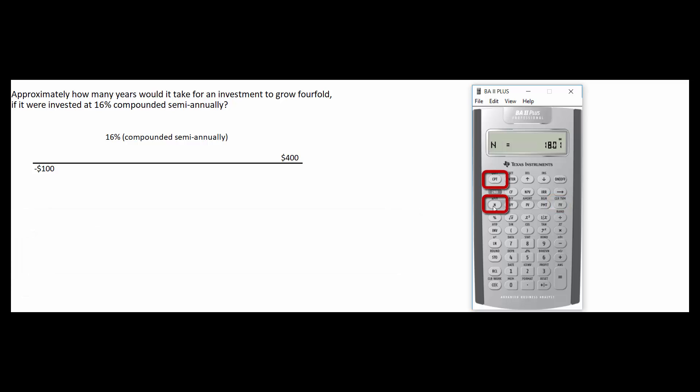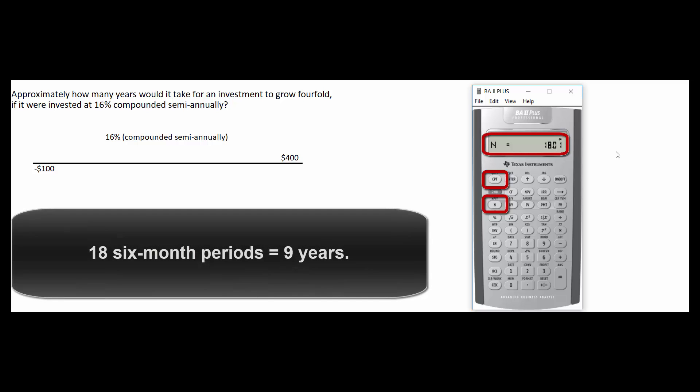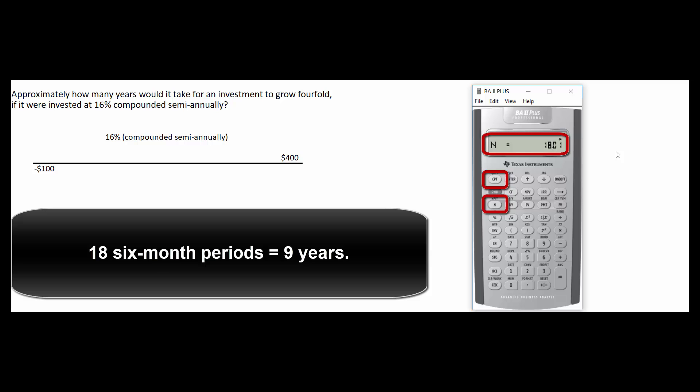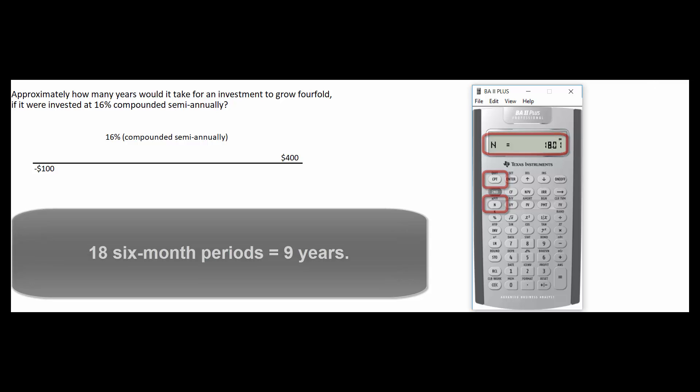So we hit compute N and it tells us it's approximately 18 six-month periods. 18 six-month periods is approximately nine years. So that's the answer to the problem.